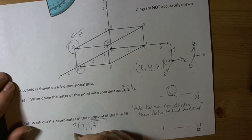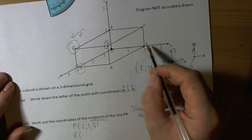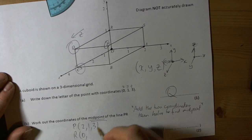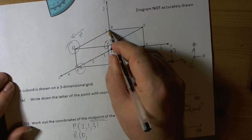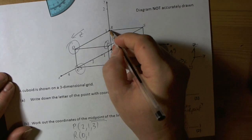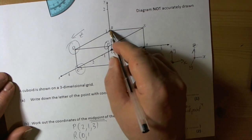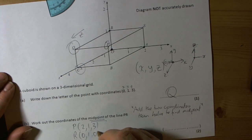The R coordinate: well, R, we had to move nothing along the X, so that's going to be 0. We had to move to the top of the box to get to R, so that's going to be 1, because the top of the box is at Y of 1. But we didn't have to move in the Z direction, because we're already there, so the Z coordinate will be 0.